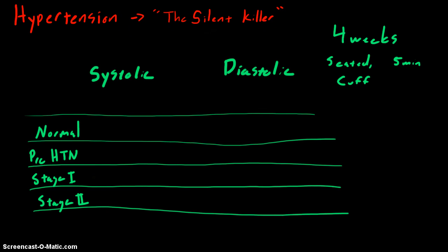We can classify blood pressure and hypertension using something called the JNC-7. JNC stands for the Joint National Committee on the Prevention, Detection, Evaluation, and Treatment of High Blood Pressure.